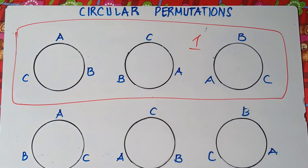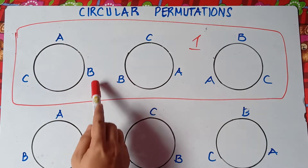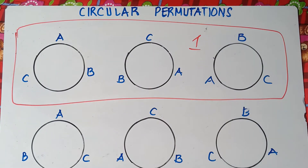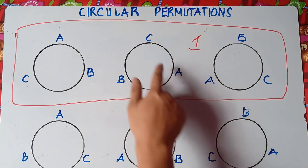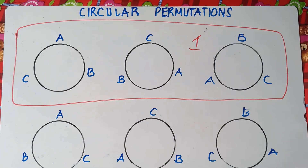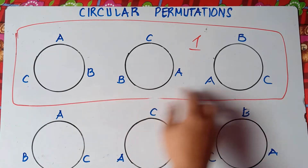You will be asking: why is it counted as one? Because if you try to analyze this, the positions are different — we have ABC, we rotate clockwise, we have ABC, ABC. But the arrangement is just the same. B is still on the right side of A and C is still on the left side of A. The positions are changed, but the arrangement is just the same. That's why we count these three circles as one.